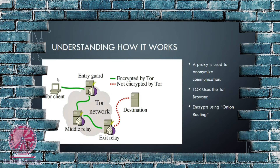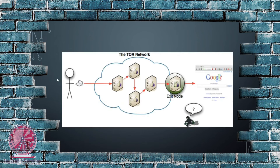Here's one more image showing how it works. Your computer connects to the first node, that node randomly selects another node, and that one selects another random node. Then you have your exit node, which takes you to the website you wanted to visit. So it's pretty simple to understand how Tor is shielding your information and keeping you anonymous on the deep web or the darknet.